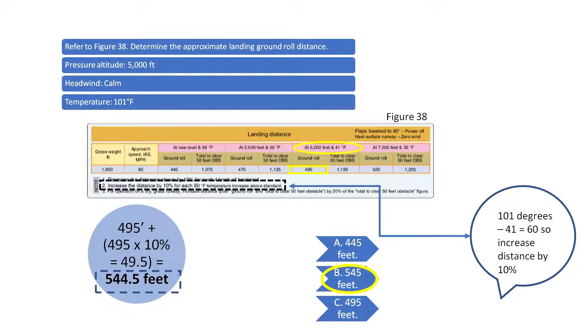The best answer is B, since that is the closest to the exact ground roll distance of 544.5 feet.